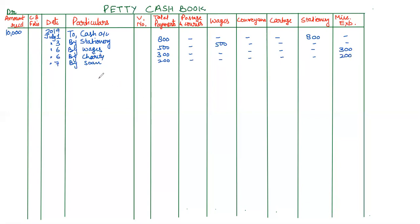Next, paid for newspaper bill on the same day — by newspaper bill. That amount is 700 rupees. First this amount will come in the total payment column, and after that in the concern column. We do not have a separate column for newspaper bill, so this amount will also come in the miscellaneous expenses column.